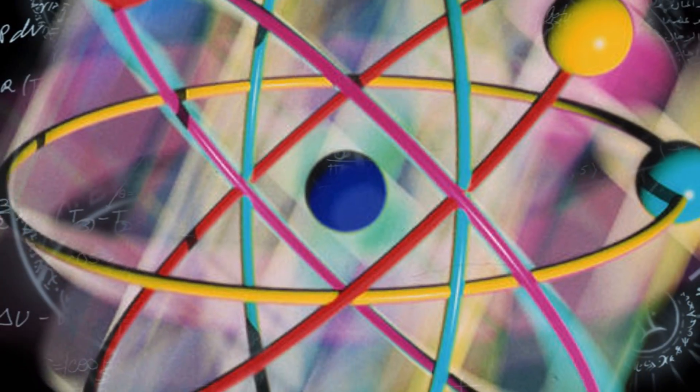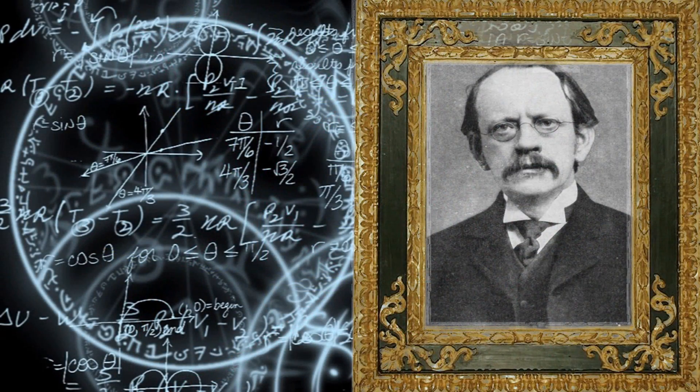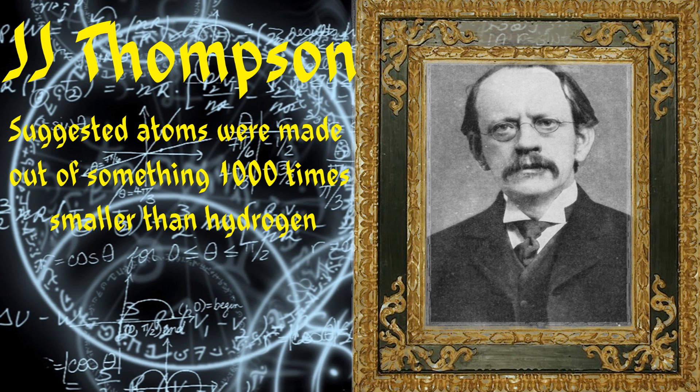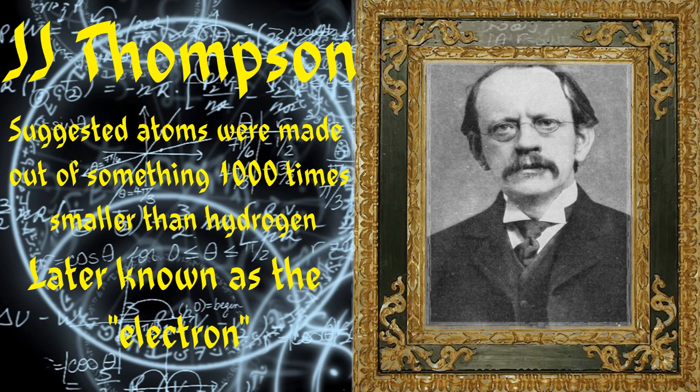Hopping back to the 1900s, we arrive at J.J. Thompson. A century ago, he was the first to suggest that one of the fundamental units of atoms was more than a thousand times smaller than the atom, suggesting the subatomic particle now known as the electron.